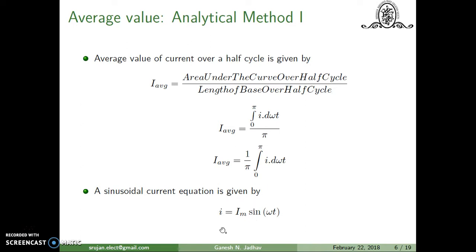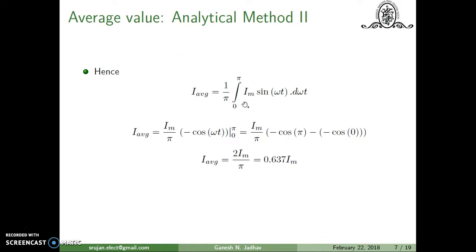For a sinusoidal current, the equation is given by i = Im sin(θ) or Im sin(ωt). In a square wave it can be given as i = Im·u(t), and for a triangular wave the equation may be different. So I_average = (1/π) · Im · integral of sin(ωt) d(ωt). Since Im is a constant, we take it outside: Im/π · integral of sin(ωt). The integration of sin(ωt) is −cos(ωt), with limits from 0 to pi. Substituting: −cos(π) − (−cos(0)) = 1 + 1 = 2. So it becomes 2Im/π. Since 2/π = 0.637, the average value equals 0.637 times the maximum value for a sinusoidal wave.